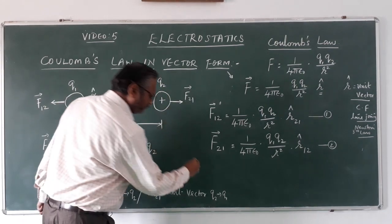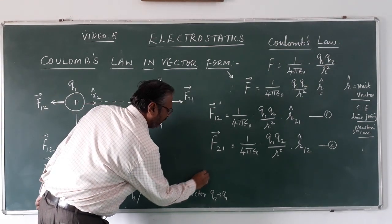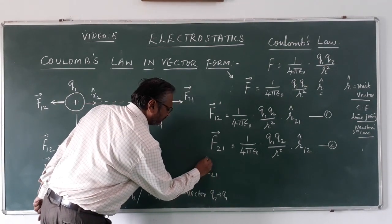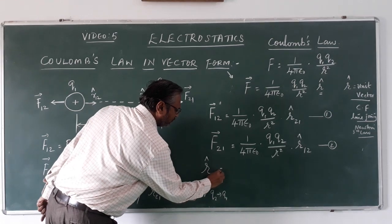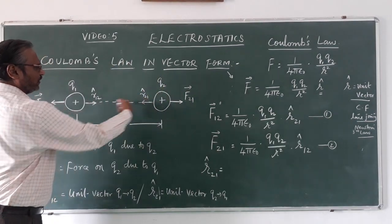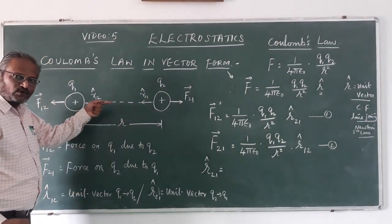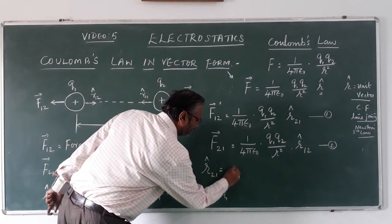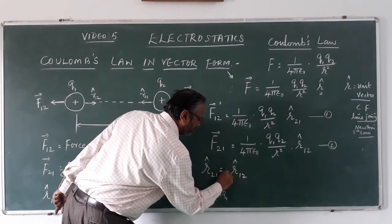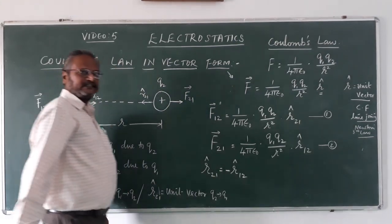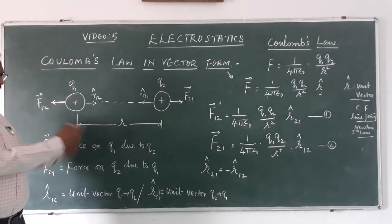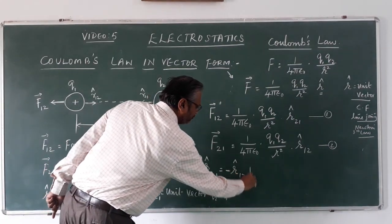Now in vectorial form we know that r̂₂₁ direction is equal to r̂₂₁ direction is opposite to r̂₁₂. So can I write minus r̂₁₂? They both are in opposite direction. So I take this condition.